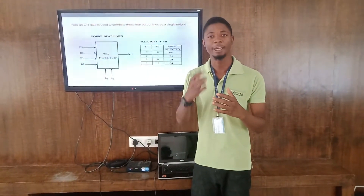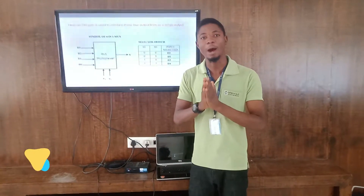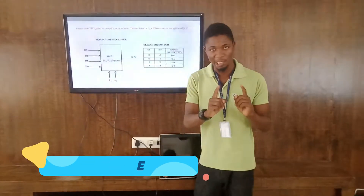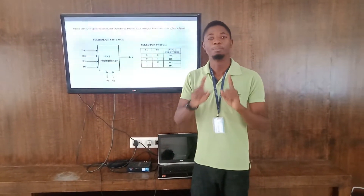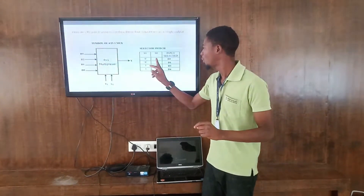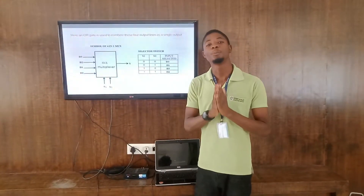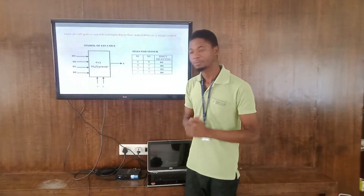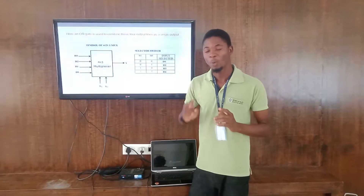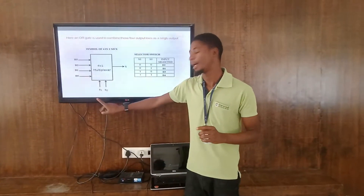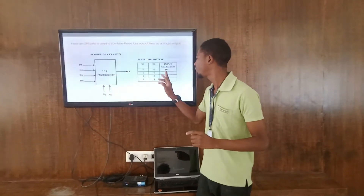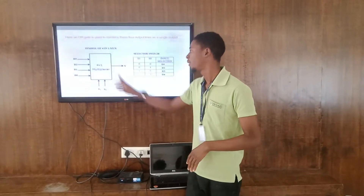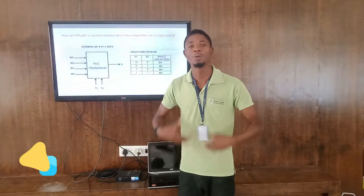All customers will have their communication delivered accurately without missing a single piece of information. For example, when selection line s1 and s0 are both zero (0,0), we get d0, meaning subscriber number one gets their information first. When s1 is equal to zero and s0 is equal to one (0,1), we get d1, which means subscriber number two has their input transferred accurately via one channel.